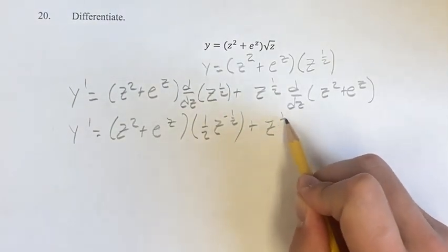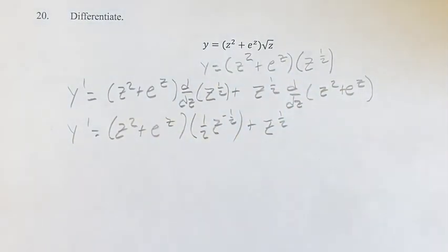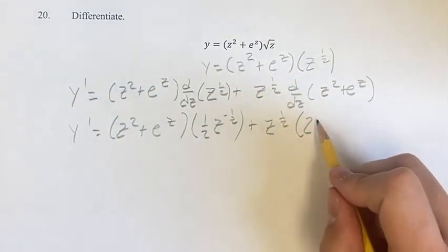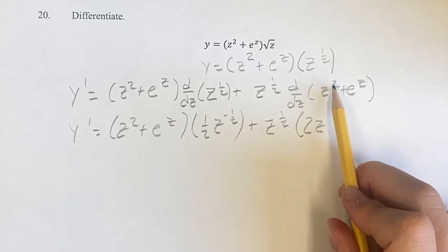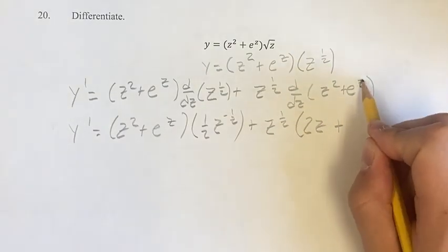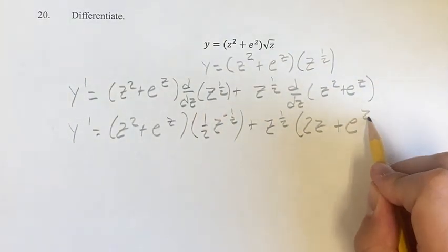Plus z to the one-half. Derivative of z squared power function, bring it down to the exponent. New exponent is the old one minus one, so two minus one is one, z to the first power z, plus the derivative of e to the z is just e to the z.